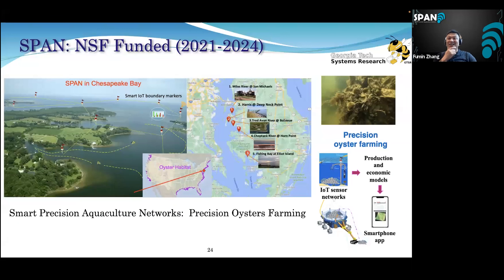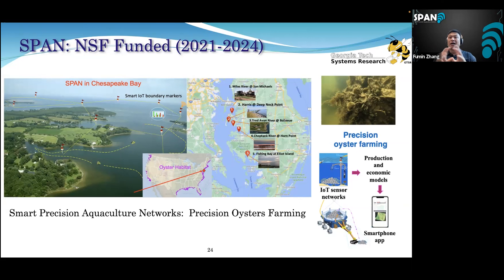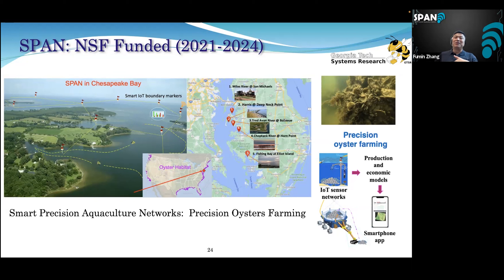Now let's talk about oyster farming and our SPAN vision. With the experience we've gained in oceanography, we now want to focus on the oyster farming economy. Based on the talks we heard yesterday, I don't have to convince you how important it is to use the latest technology, machine learning, and robotics to change the practice of oyster farming. Unfortunately, the practice in oyster farming is very much behind the technology curve — we have all these exciting capabilities on the oceanography side, but the question is how much we can actually transfer into this domain.